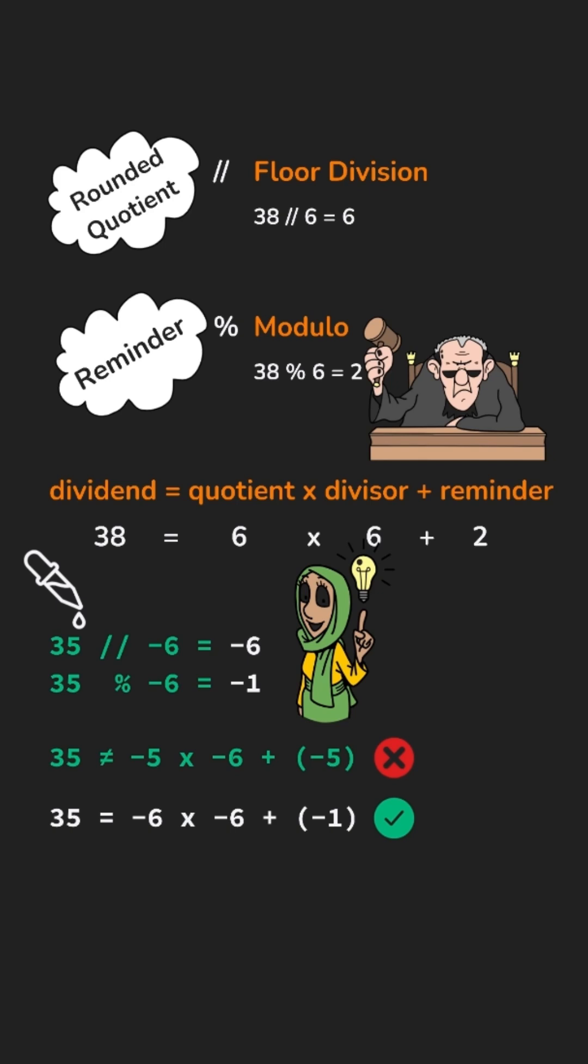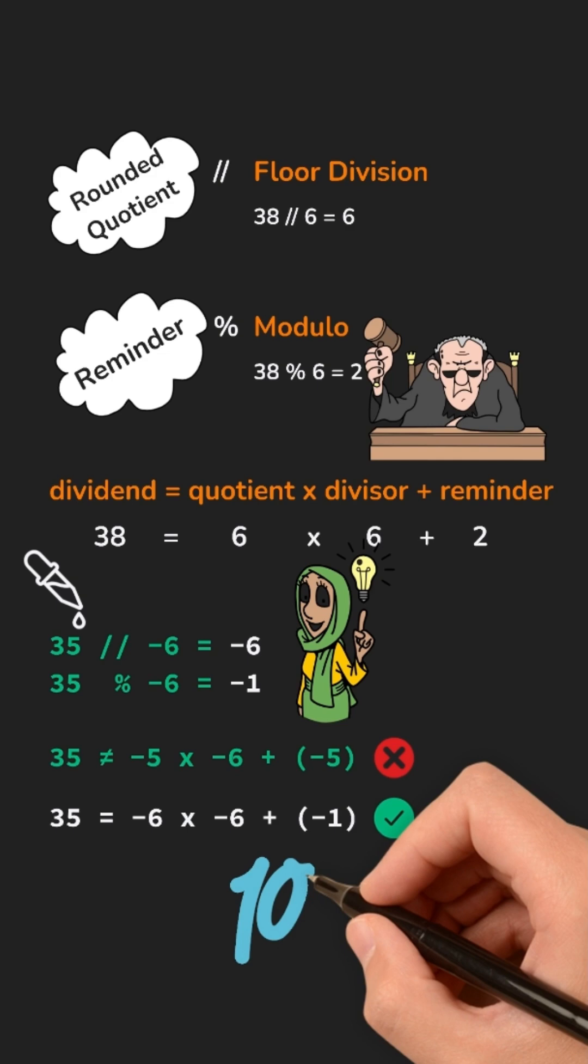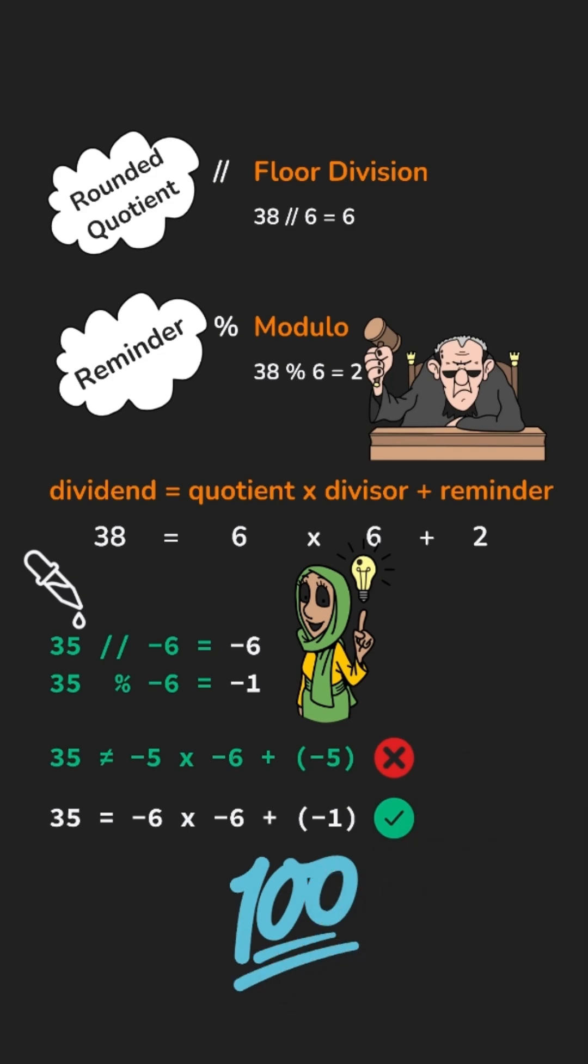So Python adjusts the quotient downward and adjusts the remainder. It may look surprising at first, but it's mathematically consistent every single time.